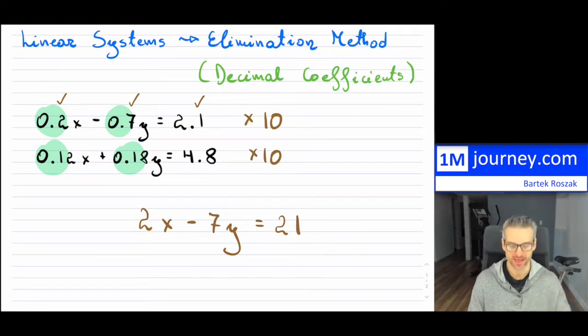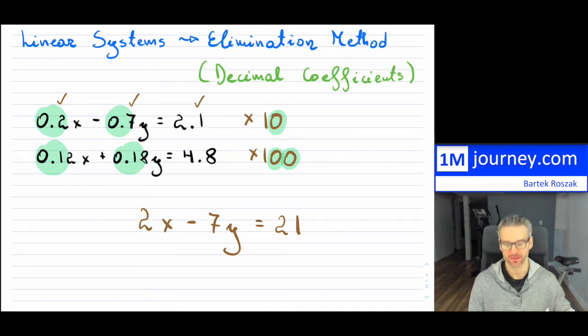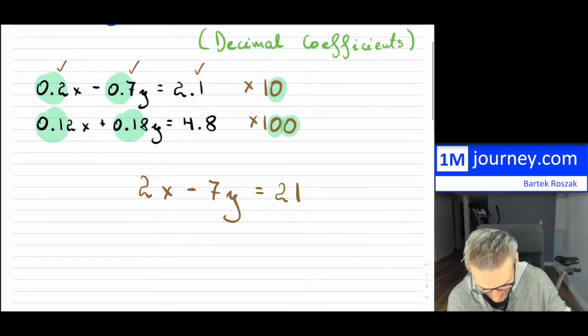So depending on how many decimal places you have, that's how many of these zeros you're going to have to include in your multiplication by powers of 10. So one decimal place, multiply by 10. Two decimal places maximum, multiply by 100. Three decimal places, if a teacher is really mean, multiply it by a thousand.